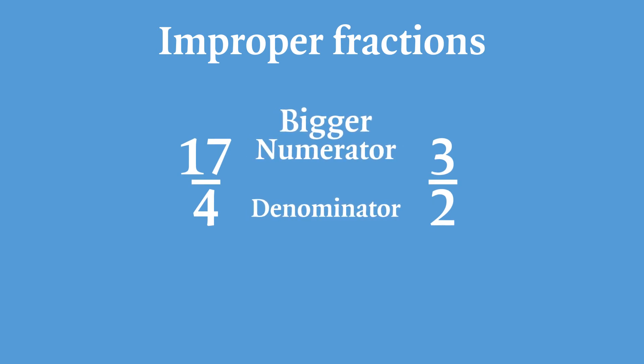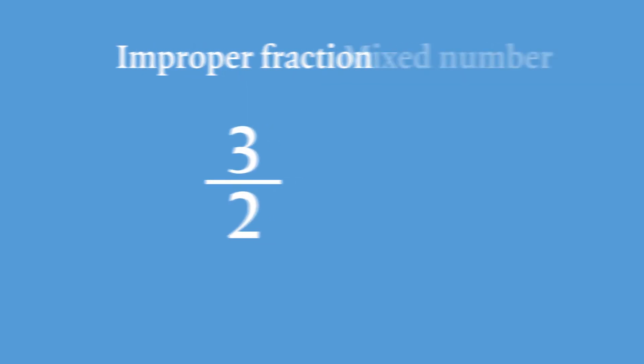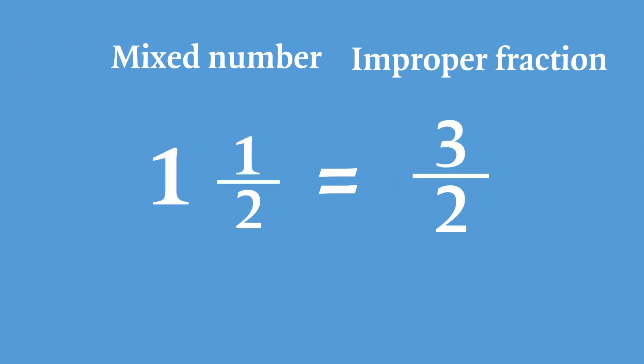Improper fractions are fractions where the numerator is bigger than the denominator, like 17 over 14 or 3 over 2. Finally, improper fractions can be written as mixed numbers. Mixed numbers are written as a whole number and a proper fraction. 3 over 2 can be written as 1 and 1 half. And we can also convert mixed numbers into fractions.